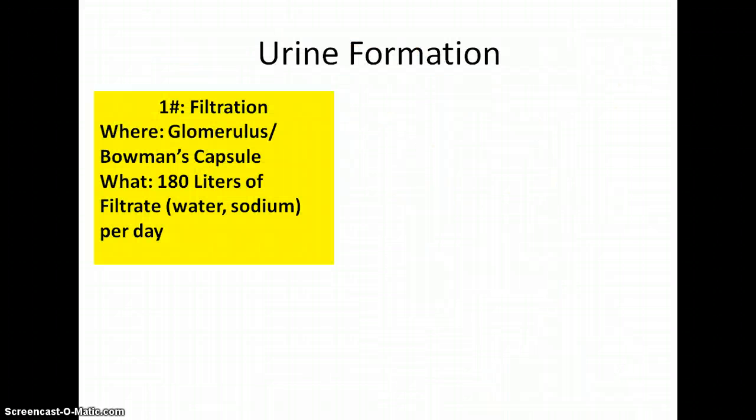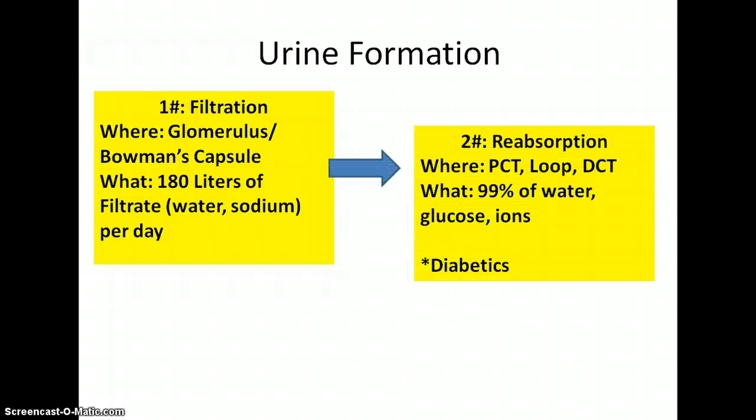Let me recap a couple of things to get you thinking. High pressure filtration happens in the glomerulus and Bowman's capsule, and believe it or not, 180 liters of filtrate are created every day. 180 liters of water and solutes get filtered out of your blood — but we know for a fact we do not urinate 180 liters of fluid. That's why we know this second step, reabsorption, has to happen.